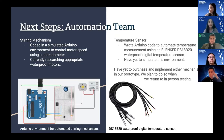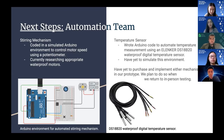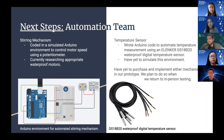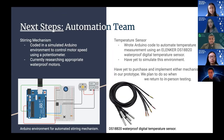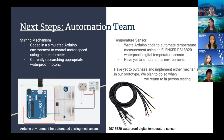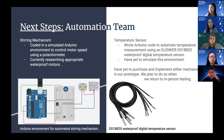As for next steps, we've split into two teams: automation and design. For automation, we have two primary goals. First is an automated stirring mechanism — we've already coded a simulated Arduino environment to control motor speed using a potentiometer, and we're currently researching appropriate waterproof motors. For the temperature sensor, we've also written Arduino code but haven't yet simulated this environment. We've found a waterproof temperature sensor but haven't purchased or implemented it yet. Most of this we plan to do when we return to in-person testing.